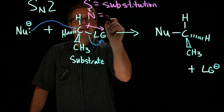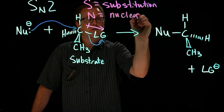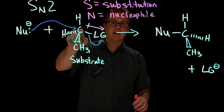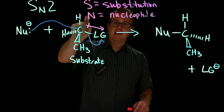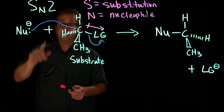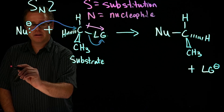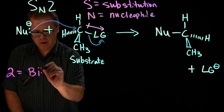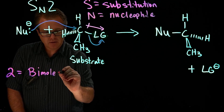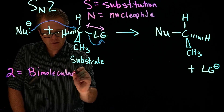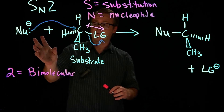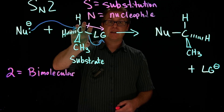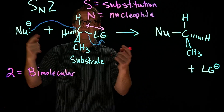The N stands for nucleophile — we have a nucleophile attacking an electrophile. So S for substitution, N for nucleophile. And the number two stands for bimolecular, because in this reaction we have our nucleophile and our substrate reacting at the same time. It's bimolecular because we have two molecules that are coming together.